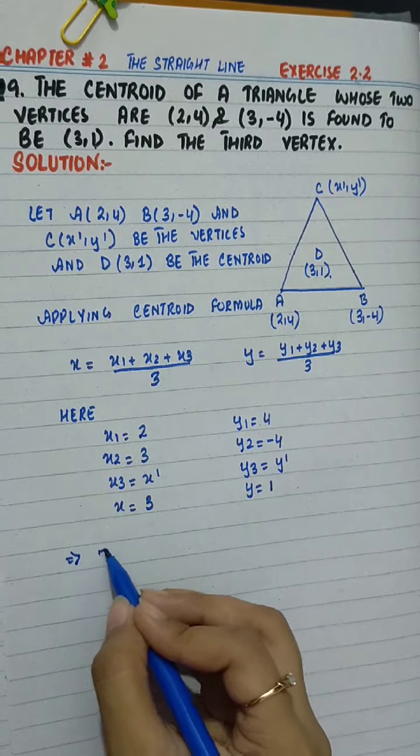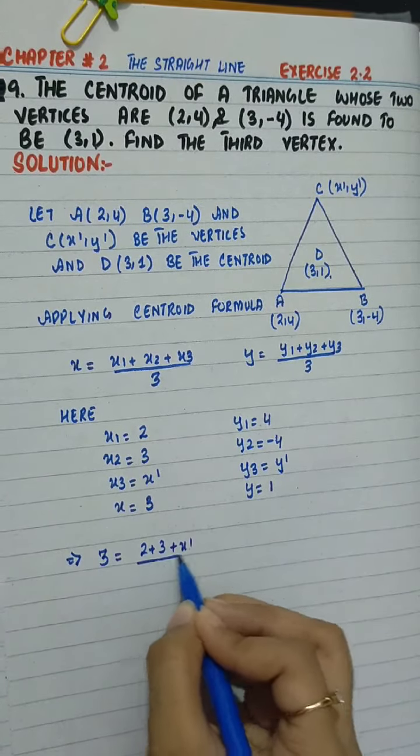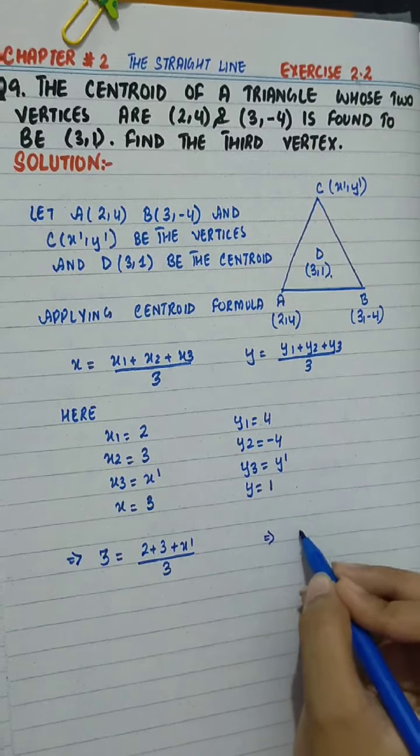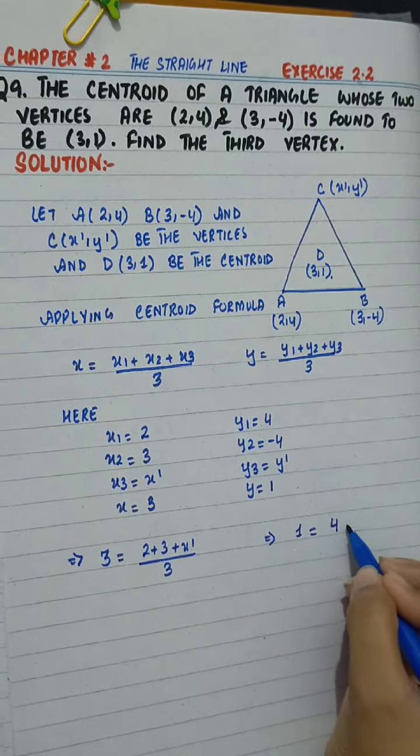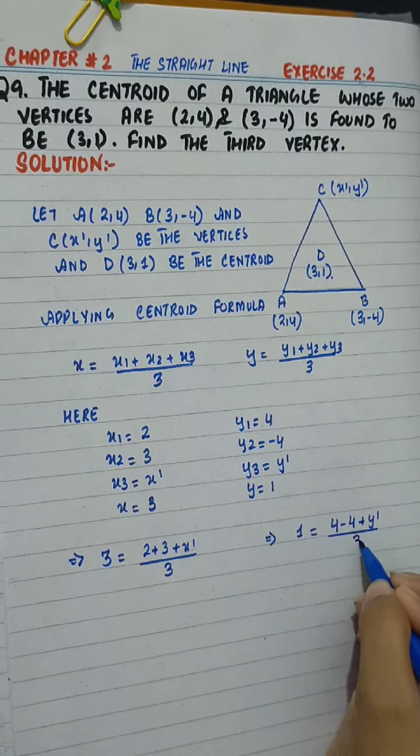Substituting the values: 3 = (2 + 3 + x')/3, and 1 = (4 - 4 + y')/3.